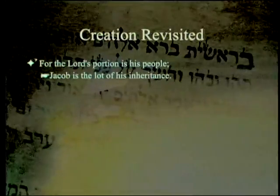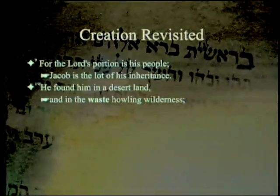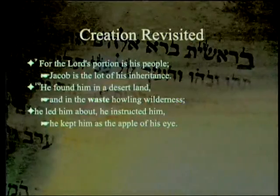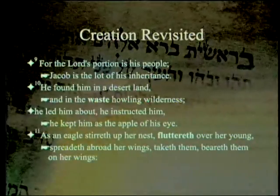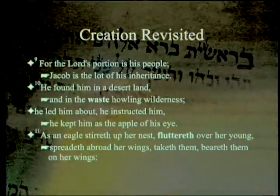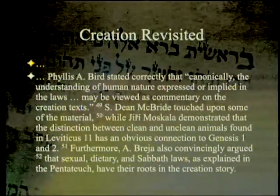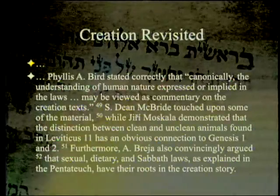The passage reads: 'For the Lord's portion is his people, Jacob is the lot of his inheritance. He found him in a desert land, and in a waste howling wilderness' — that 'waste' is 'tohu' — 'He led him about, he instructed him, he kept him as the apple of his eye. As an eagle stirreth up her nest, fluttereth — rahap — over her young, spreadeth abroad her wings, taketh them, beareth them on her wings.' The presenter notes it is a bit of a reach to press 'rahap' and 'tohu' together quite so tightly given the different context.